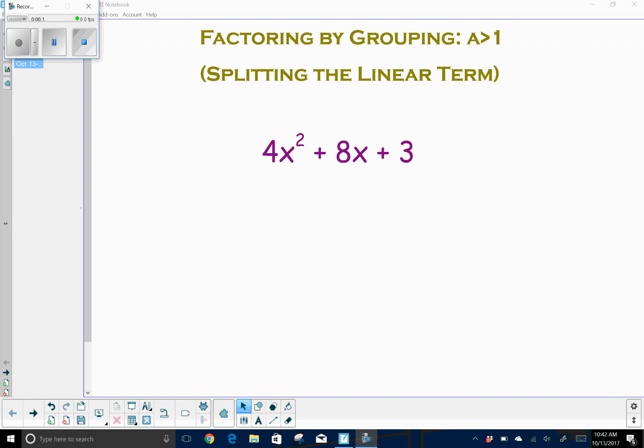When you're factoring a trinomial, it's made up of three terms. It's made up of a quadratic term which is a, a linear term b, and a constant on the end of the standard form ax squared plus bx plus c.